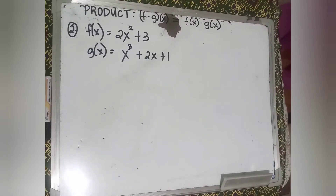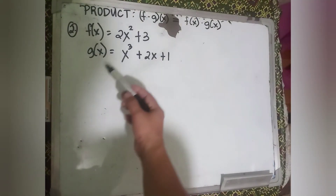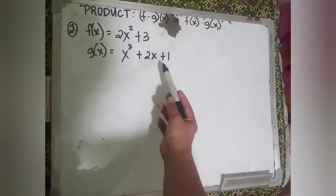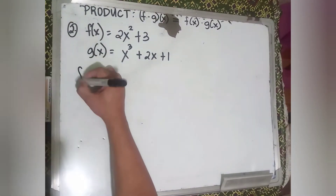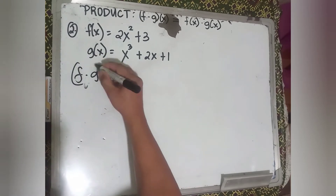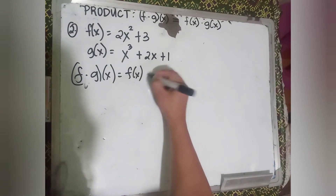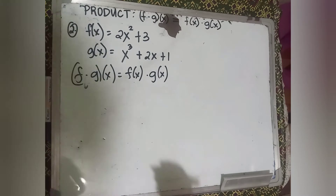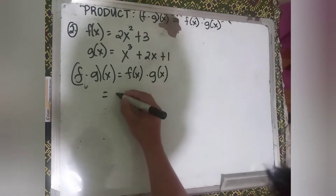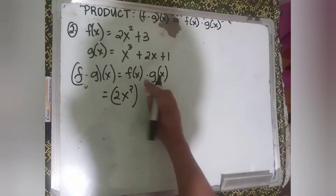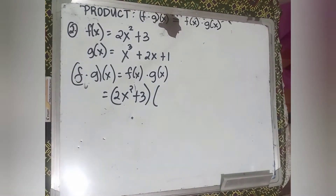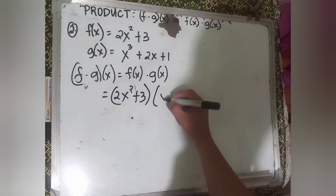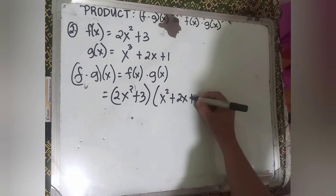Let's try another example. Example number 2: f of x equals 2x squared plus 3, and g of x equals x cubed plus 2x plus 1. Find the product of these functions. Using the formula (f times g)(x) equals f of x times g of x, we substitute: 2x squared plus 3, times x cubed plus 2x plus 1.